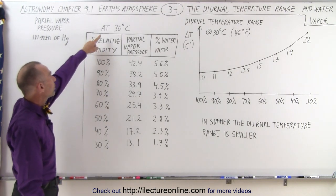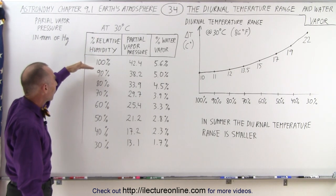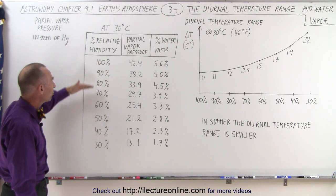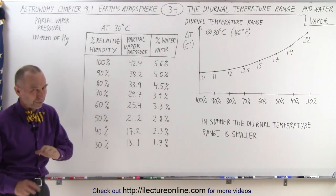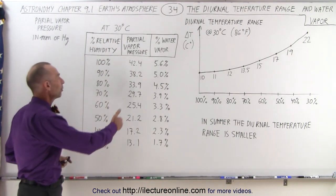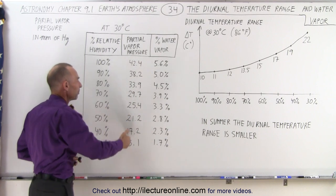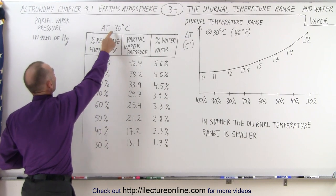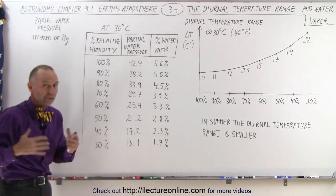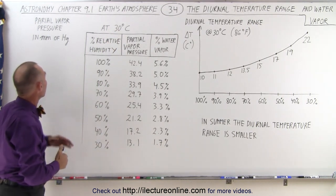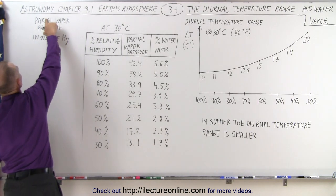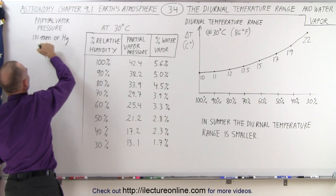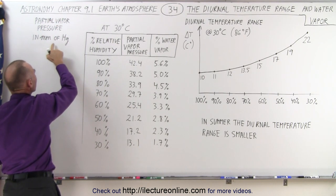Let's say that at 30 degrees centigrade we want to have a relative humidity going anywhere from 100% to 30%, which means we can then calculate the partial vapor pressure. They've already done that for us, so we've simply listed the partial vapor pressure at the various relative humidities for an air temperature of 30 degrees centigrade. Of course, for different temperatures that would be a different number. Partial vapor pressure is going to be measured in millimeters of mercury.